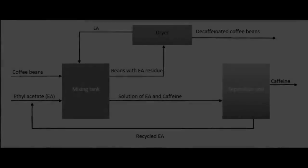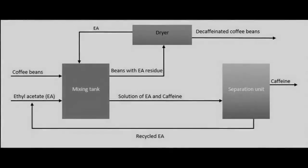The caffeine-laden solvent is then drained away and the beans are steamed again to remove the residual solvent. The use of ethyl acetate as a solvent for decaffeination of coffee is FDA approved under Title 21 Part 173.228. In this process we have a mixing tank, a dryer, and a separation unit.